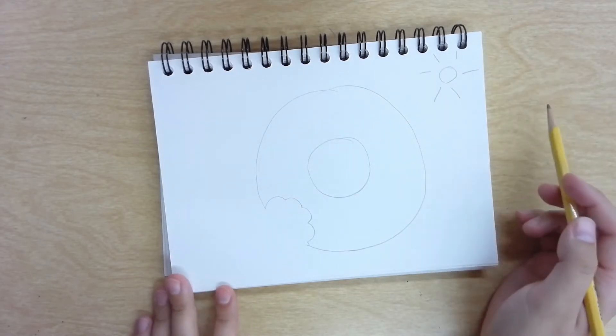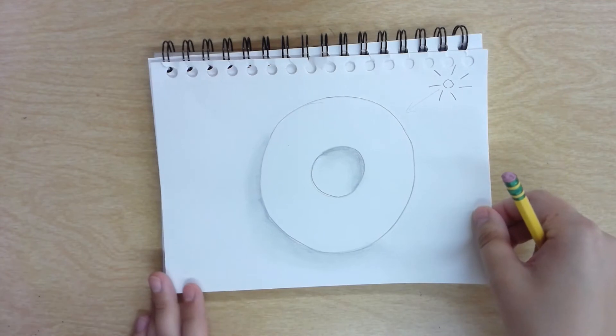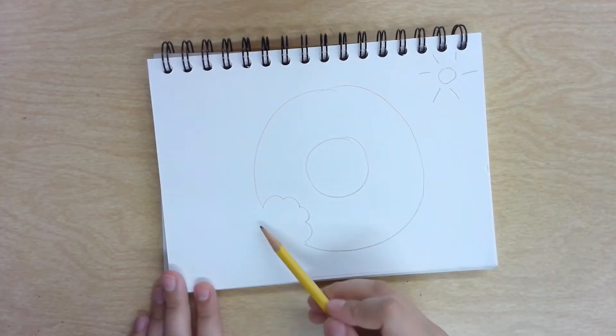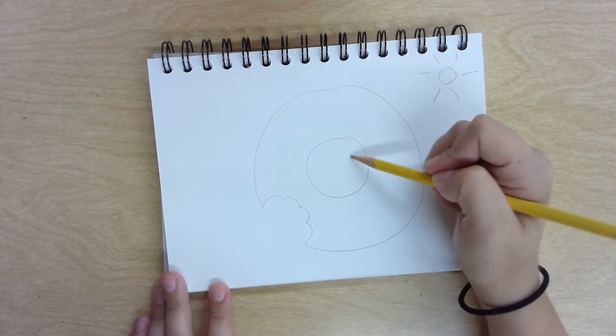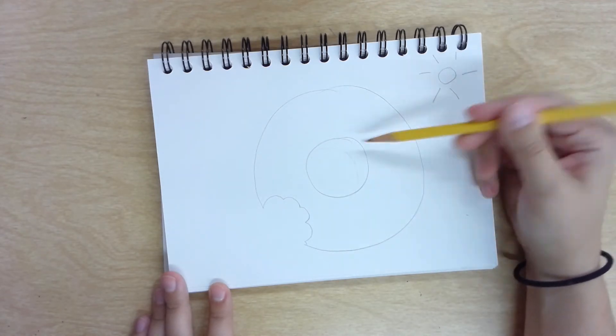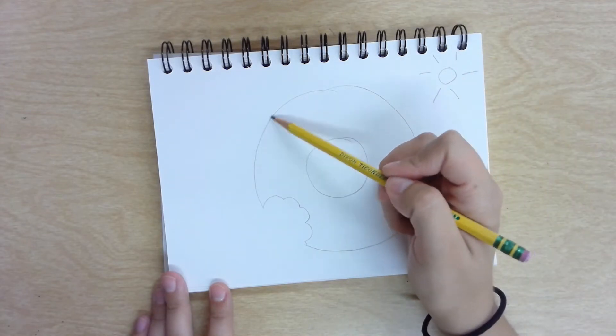The only thing that's different between this donut where we don't have the bite in it with the value and this one is just this little section here. So for starters, we're going to get the main value in. I know that the shadow is going to be on this side because my light source hits my donut on this side and casts a shadow on the opposite side.